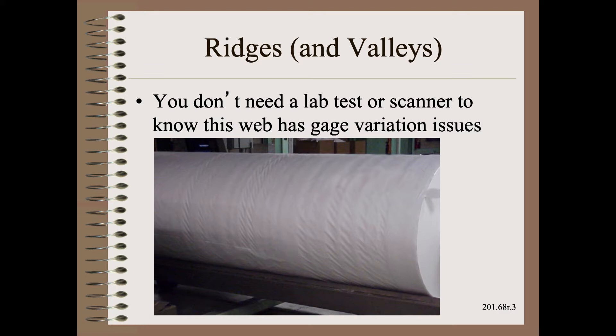Neither are tin cans caused by web thickness variations, per se. We learn in the winding sections of my Web 101 course a dozen different ways to know that you have profile variations in basis weight, caliper, density, gauge, thickness, or whatever you want to call it. In this picture, we see ridges, valleys, and corrugations, but there are no tin cans here. Corrugations are not tin cans, and tin cans are not corrugations.